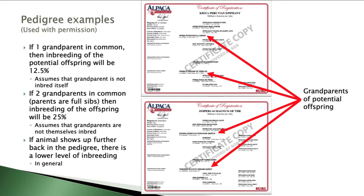Some publications recommend that when looking at a breed or breeding program as a whole, the average inbreeding should be 6% or less. Keep in mind that is the average of the whole population, whereas in this example we looked at the inbreeding of a single individual — so bear that in mind as you make breeding plans.